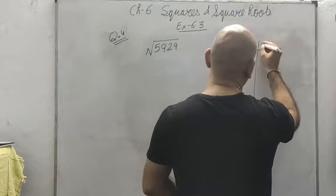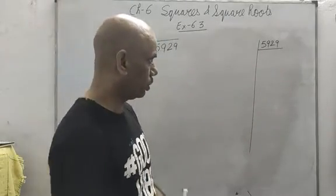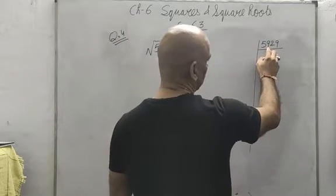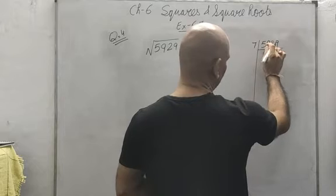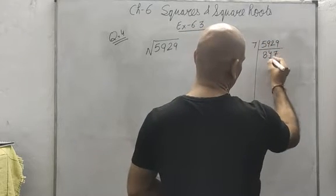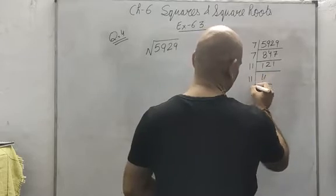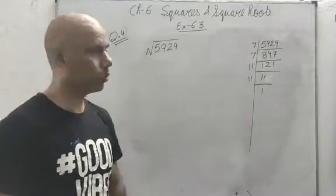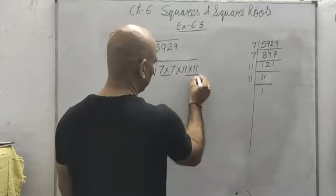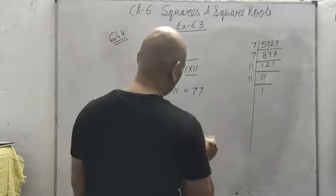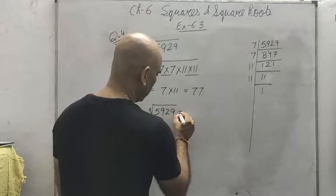For 5929, I will find the prime factors. Checking divisibility: not by 2, 3, or 5. By 7: 5929 ÷ 7 = 847, ÷ 7 = 121, and 121 = 11 × 11. So the prime factors are 7 × 7 × 11 × 11. There is a pair of 7 and a pair of 11. So the square root is 7 × 11 = 77. The square root of 5929 is 77.